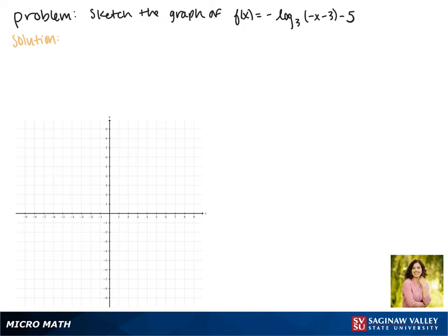We'll start by rewriting our function so that the x inside of our natural log is by itself. So we have f of x equals the negative log base 3. By factoring out a negative, we get the negative times x plus 3 and then minus 5.